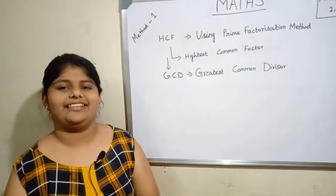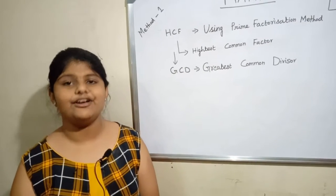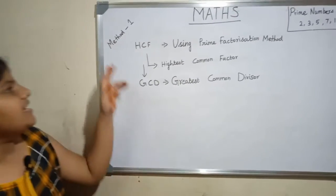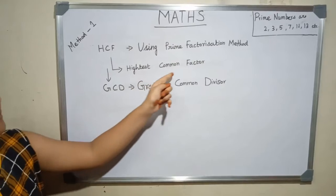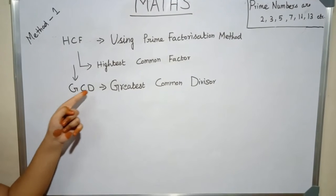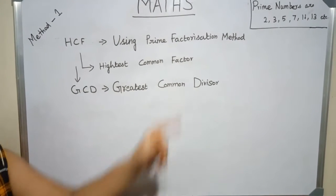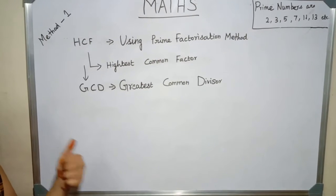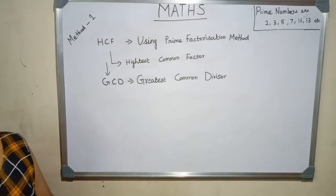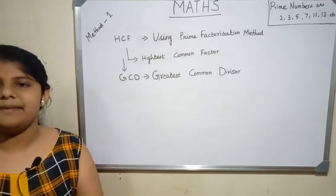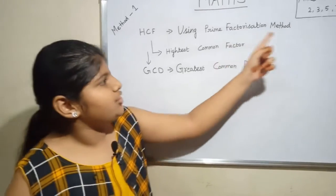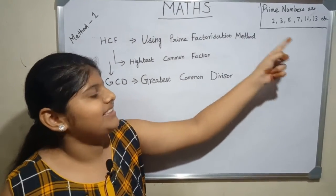Hi friends, welcome to Sami's channel. In this video we are going to see how to do HCF using the prime factorization method. The full form of HCF is Highest Common Factor. The other name of HCF is GCD — the full form of GCD is Greatest Common Divisor. Before going into the problems, we have to know the prime numbers. Prime numbers are which can be divisible by itself and by the number one — they have only two factors. Examples: 2, 3, 5, 7, 11, 13, etc.